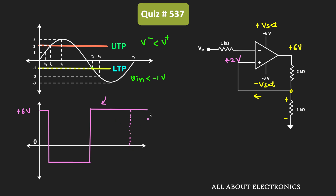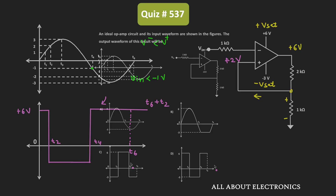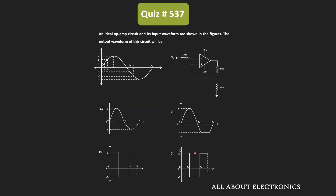To be precise, from t6 up to the next t2 point, Vin remains less than +2V and the output stays at +6V, after which the same sequence repeats. For one full time period, this is how the output waveform looks. Based on the output waveforms given, option D is the correct answer.